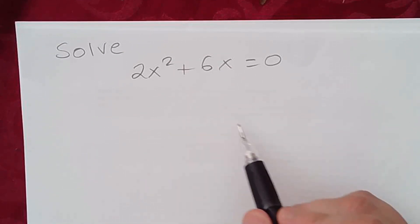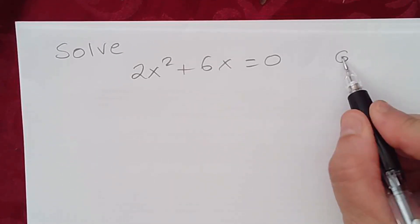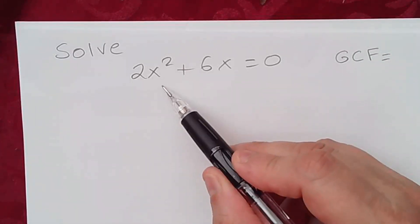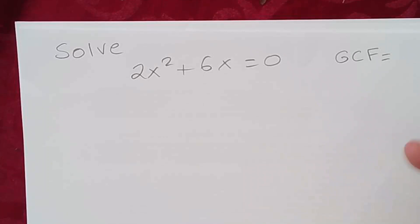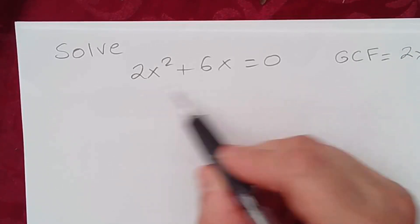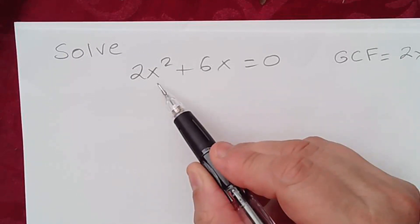To solve this quadratic equation, we need to find the greatest common factor, the GCF. The GCF of 2x² and 6x would be 2x. Remember, 2 is a common factor of 2 and 6, and x is a common factor of x² and x.